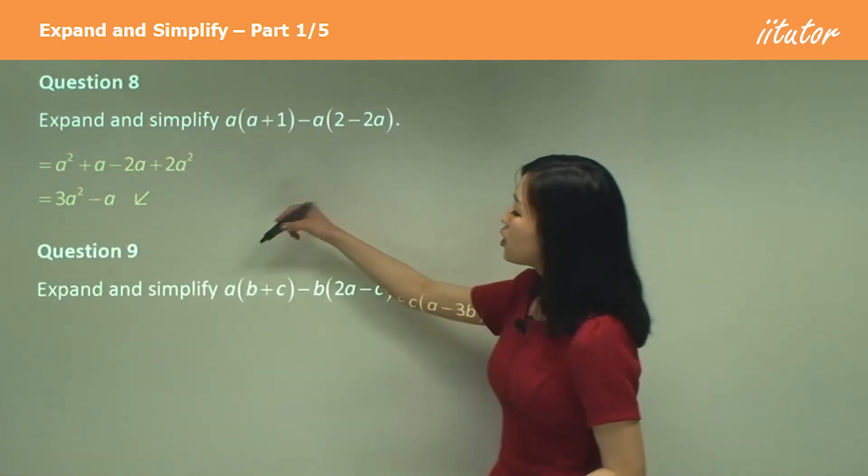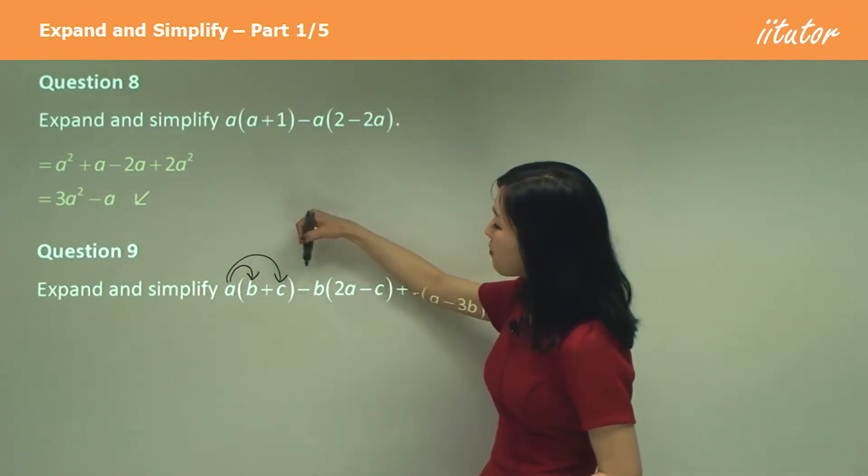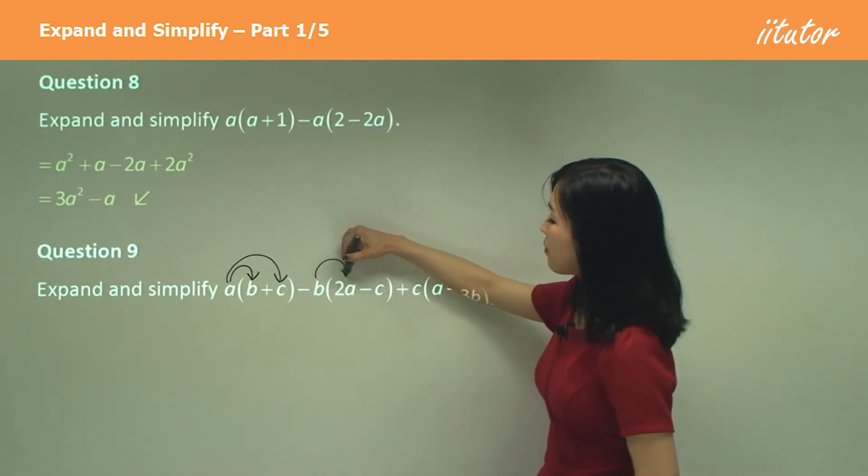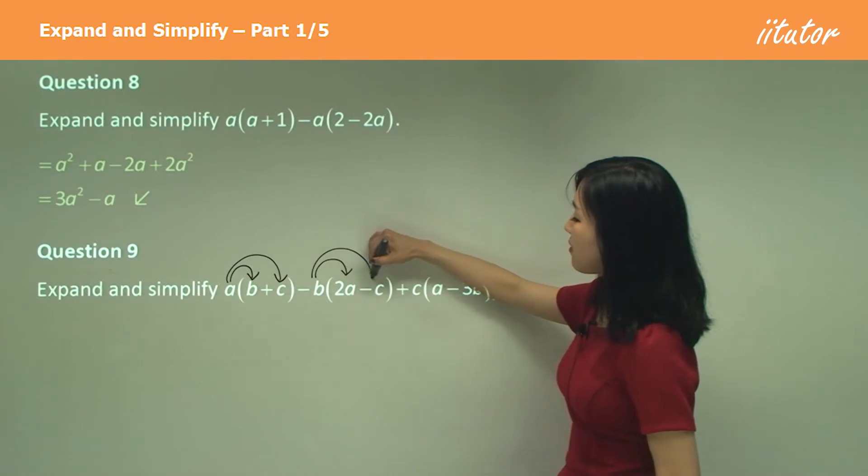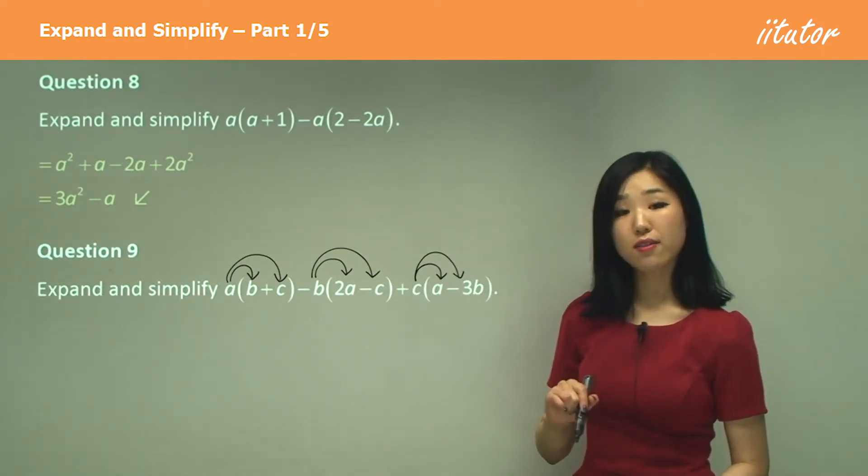So again multiply your a with your b and your c, and here whenever you have a minus be extra careful. Minus b times 2a, minus b times negative c, and then we do c times a and then we also do c times negative 3b. Okay that's all you need to do.